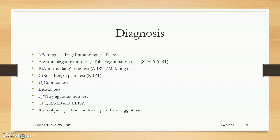Serological tests include: serum tube agglutination test, which is the gold standard test (GST); Abortus Bang ring test, named after scientist Bang; Rose Bengal plate test; complement fixation test; Coombs test; Whey agglutination test; and Rivanol precipitation test.